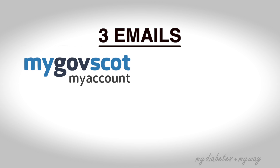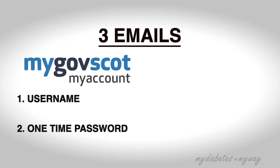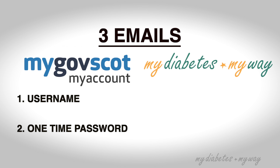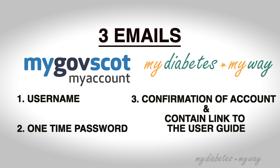To begin with, you will have received three emails. Two of these emails will come from the My Account service. One will contain your username and the other will have your one-time password. The third email you receive will be from MyDiabetesMyWay. This email will tell you that the account details have been set up and will contain a link to the user guide. If you cannot see these emails in your inbox, please check your spam or junk folders in case they are filed there by mistake.